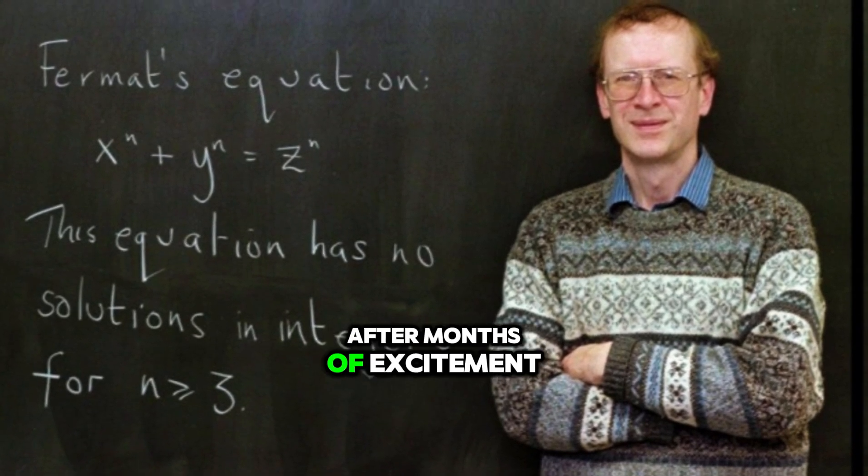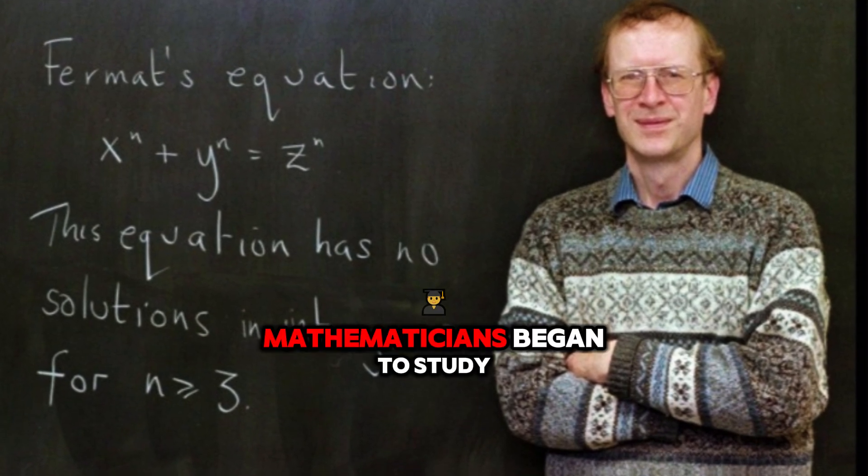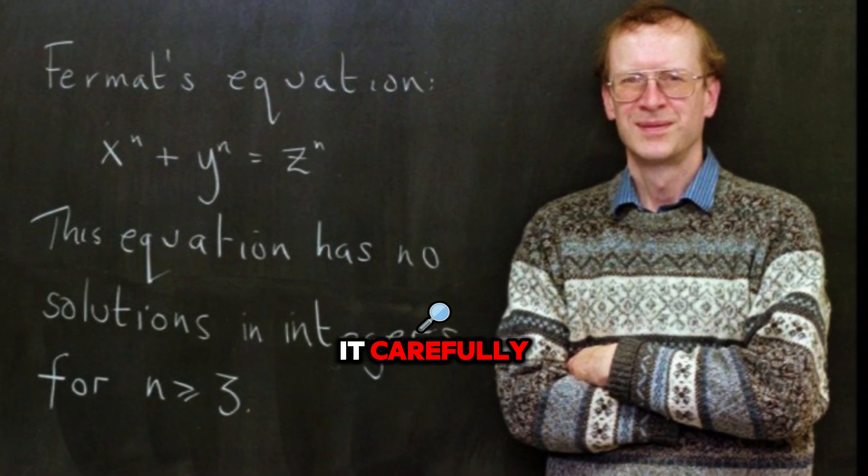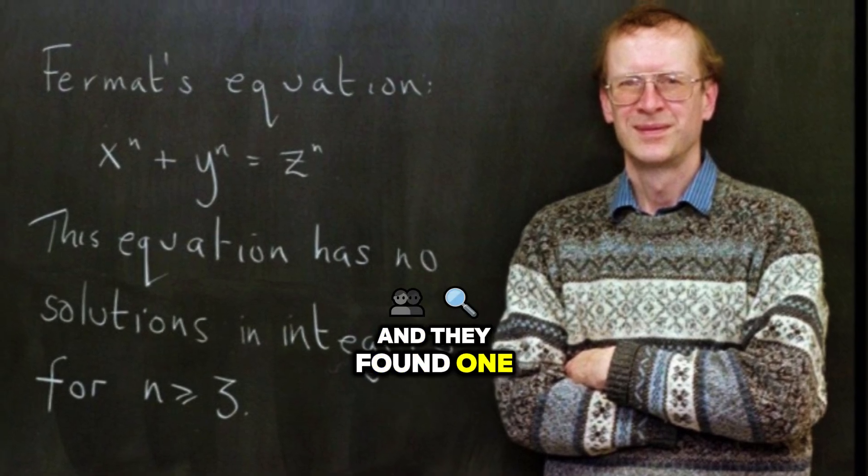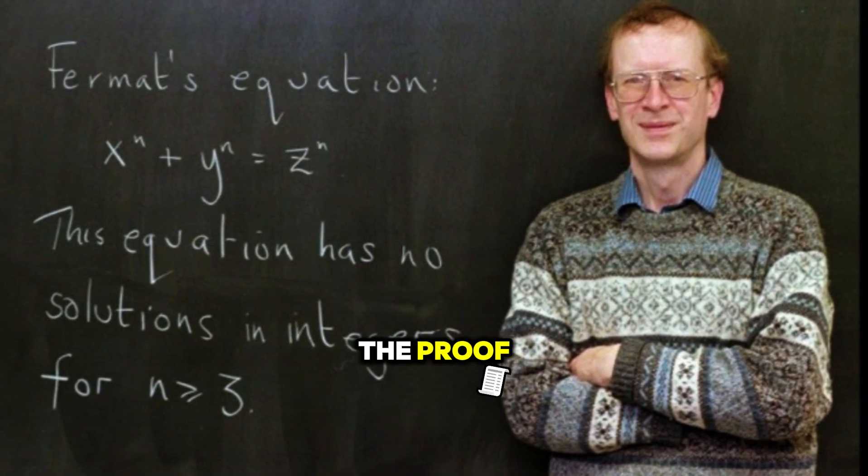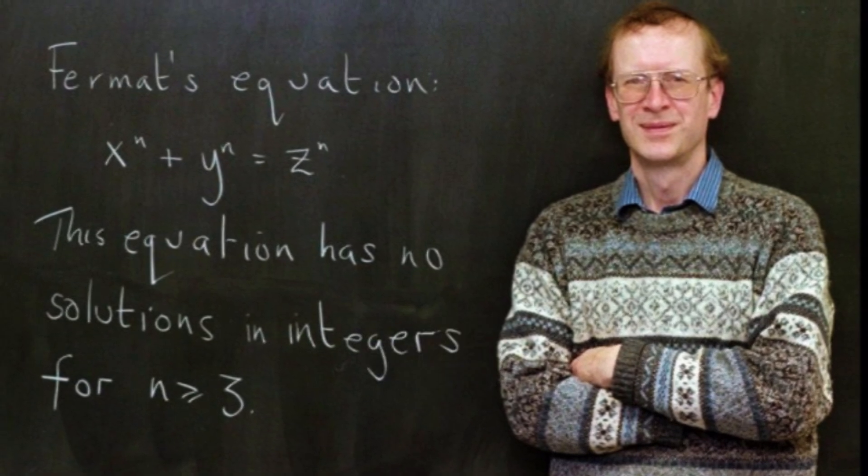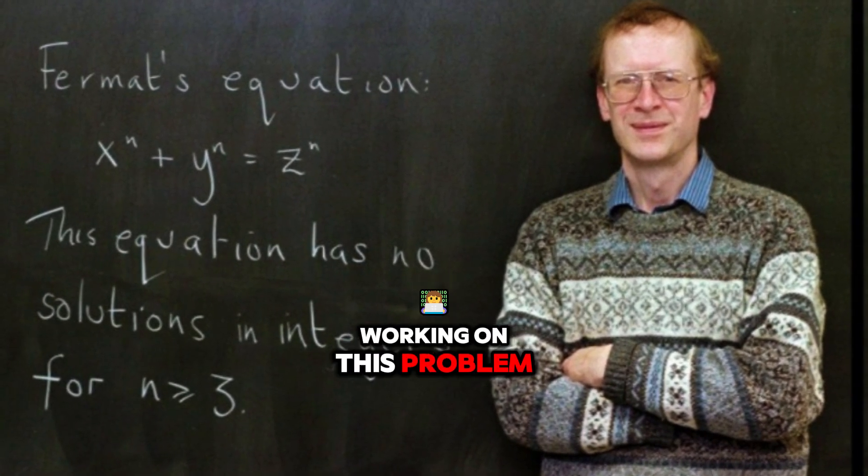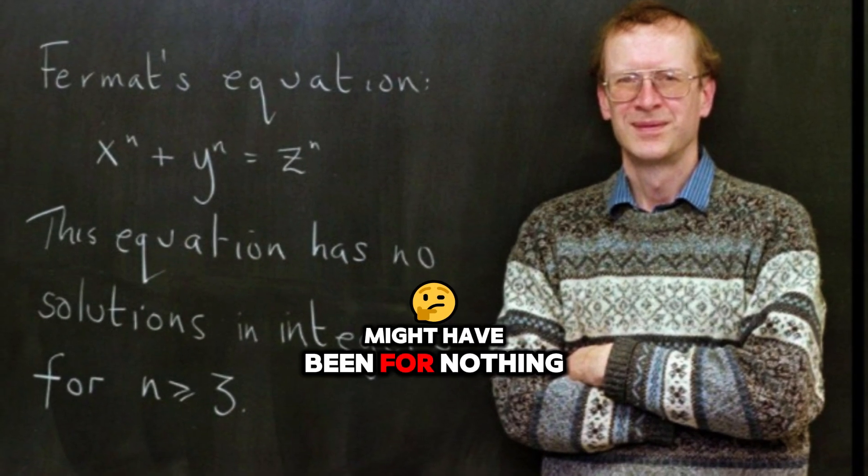After months of excitement and anticipation, Wiles' proof was put under scrutiny. Mathematicians began to study it carefully, looking for any weaknesses. And they found one, a small mistake in the proof. This mistake was a huge blow to Wiles. He had spent years working on this problem, and now it seemed like all of his hard work might have been for nothing.